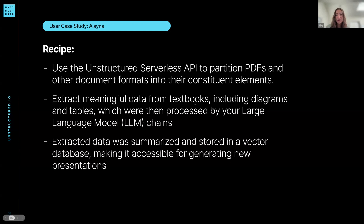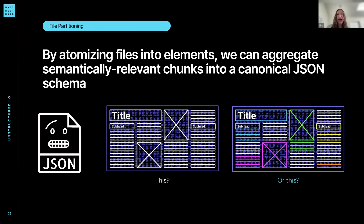Their code is closed source, so I'm just pointing folks to the different steps that make it possible. We're atomizing documents into elements — classifying different parts of the document. Instead of everything being raw OCR output, we're categorizing whether something is a title, subheading, page number, footnote, image, table, and all these different elements.